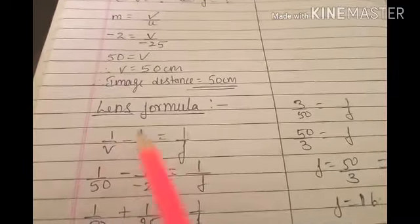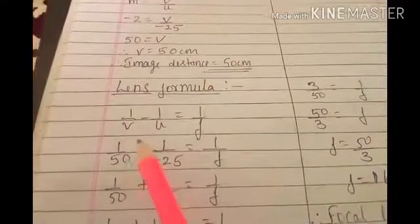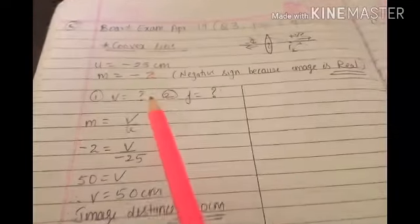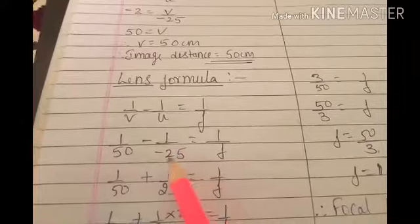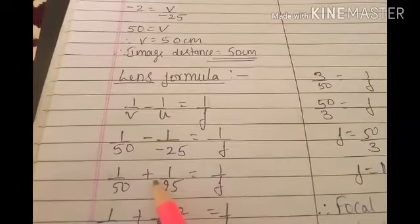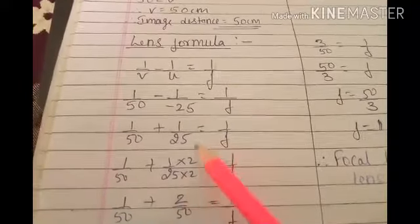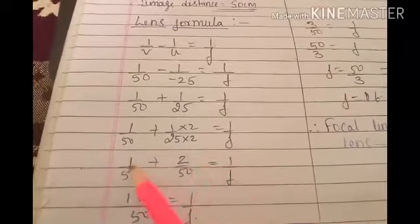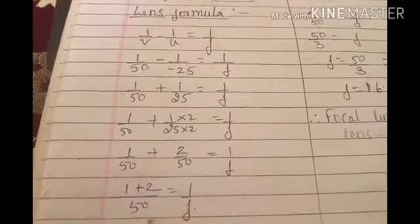1/V - 1/U = 1/F. Substitute the values: V is 50 cm, so 1/50 minus 1 upon U, which is minus 25 cm. But minus into minus is plus, so write plus here. To make denominator common, multiply by 2, so it equals 1/F.